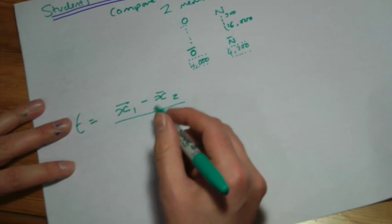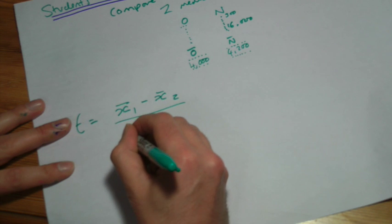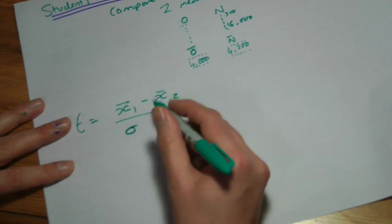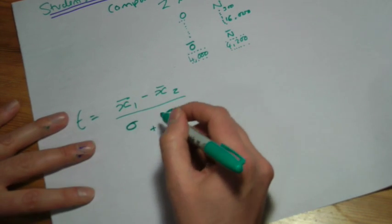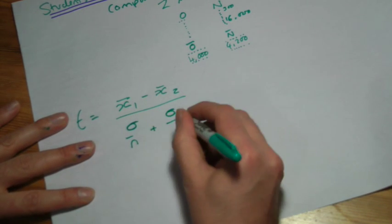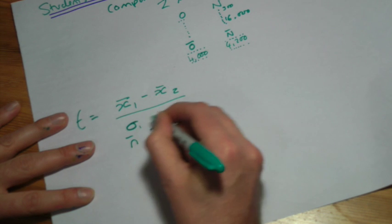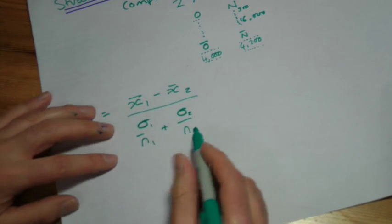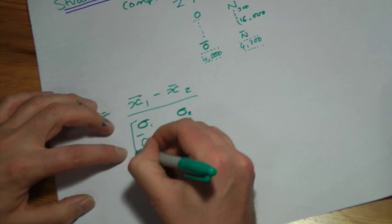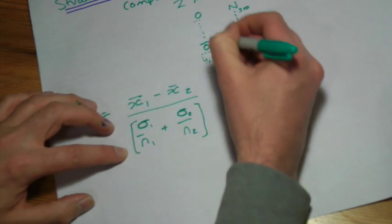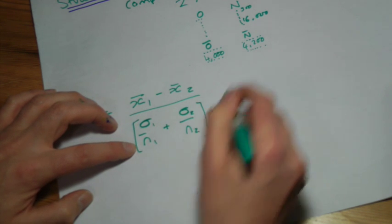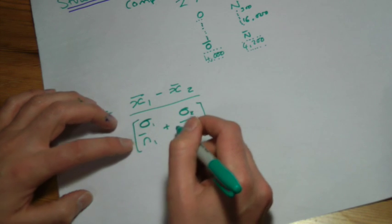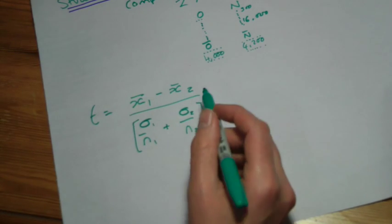Then we divide the whole thing by the bottom of the formula. Using the textbook's example: standard deviation 1, standard deviation 2, and n1, n2. This is a bit like when we did standard deviation — n is the number of data points we had, which can be different. Maybe we did more people with the original medicine. It doesn't always have to be the same number.